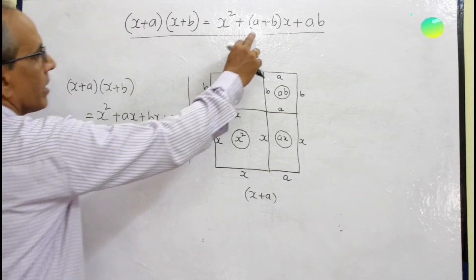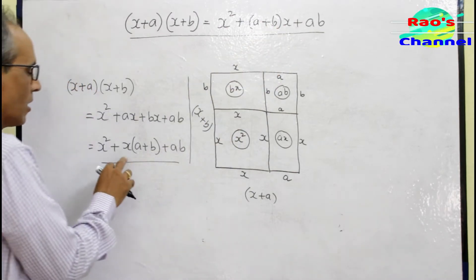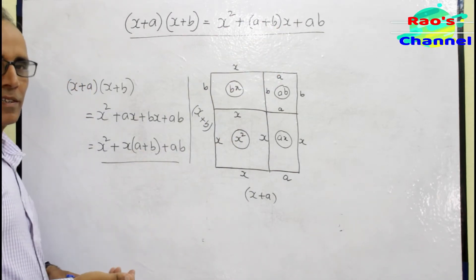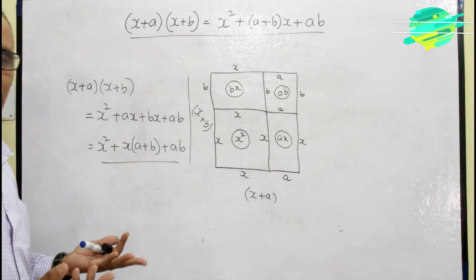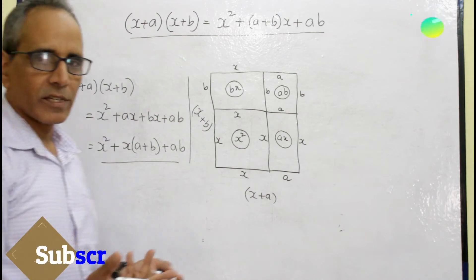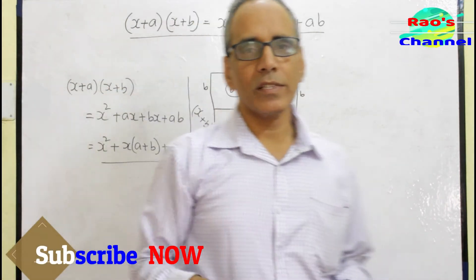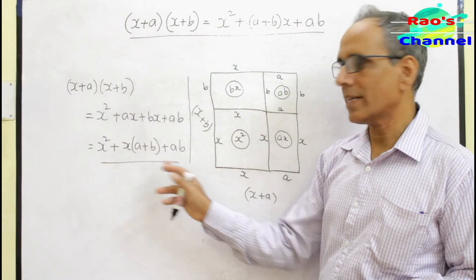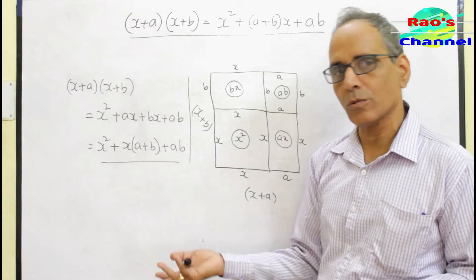You may ask what is here - in the identity (a+b)x and here I wrote x(a+b). You can multiply the factors in any order by commutative property. That is a×b = b×a, so (a+b)x is nothing but x(a+b). You can write x here or at the end of the binomial after the bracket too.